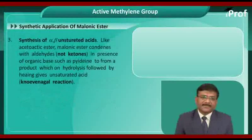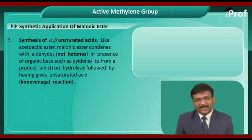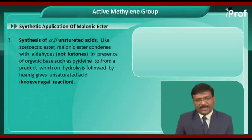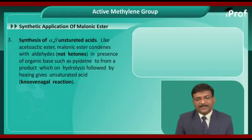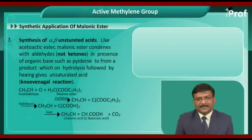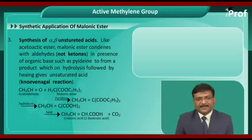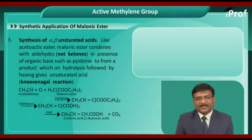Next, synthesis of alpha-beta unsaturated acids. Like acetoacetic ester, malonic ester condenses with aldehydes in the presence of an organic base such as pyridine to form a product, which on further hydrolysis followed by heating gives an alpha-beta unsaturated acid. In this reaction, only aldehydes are used, while ketones do not show this kind of reaction.